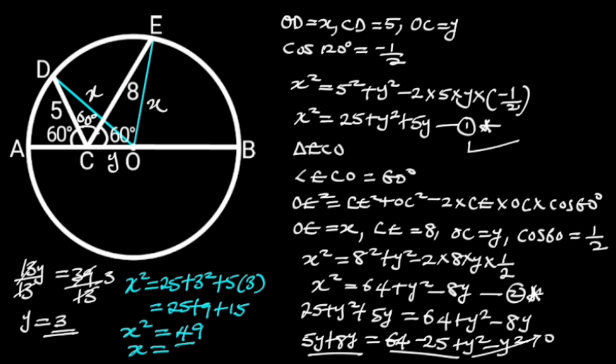Taking the square root of both sides will give us X is equal to 7. Hence, the radius of the circle is 7 units.